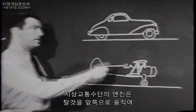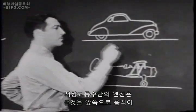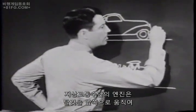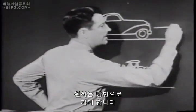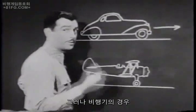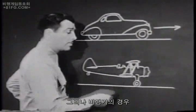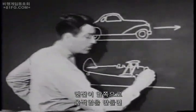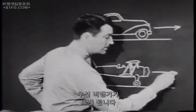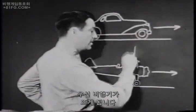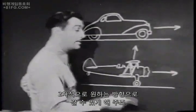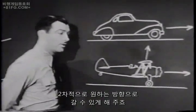The power plant of any ground-borne vehicle produces forward motion simply to take you where you want to go. But the power plant of an airplane produces forward motion, first of all, to make the airplane fly, and secondly, to take you where you want to go.